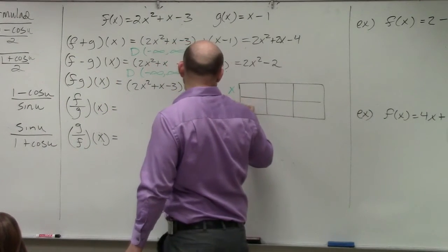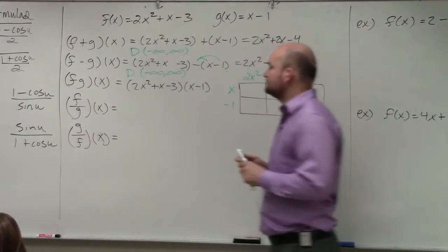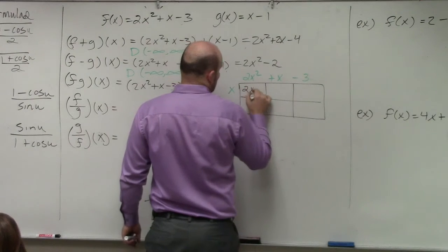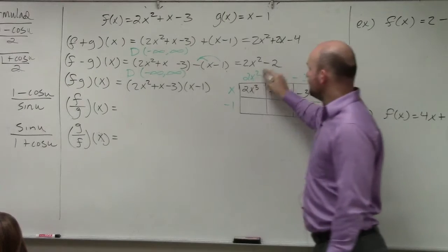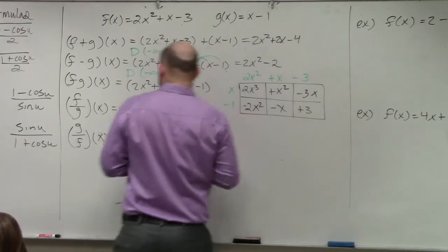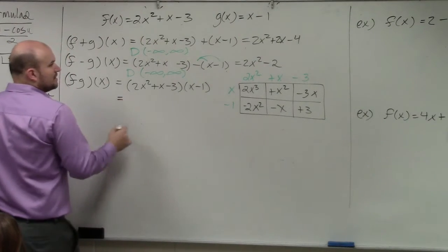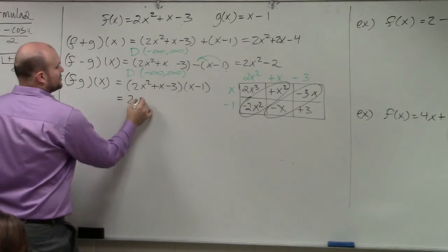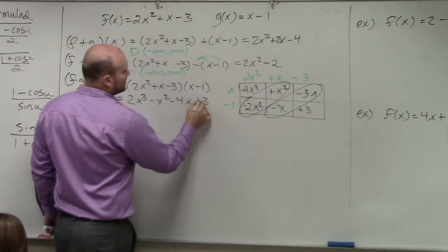So I'm going to do x minus 1 and 2x squared plus x minus 3. In this example, I multiply. I have 2x cubed plus x squared minus 3x. 2x squared times negative 1 is negative 2x squared minus x plus 3. I'm actually going to run out of little space here, so I'll just write my answer down below. So I see that these are like terms and these are like terms. So my answer is 2x cubed minus x squared minus 4x plus 3.